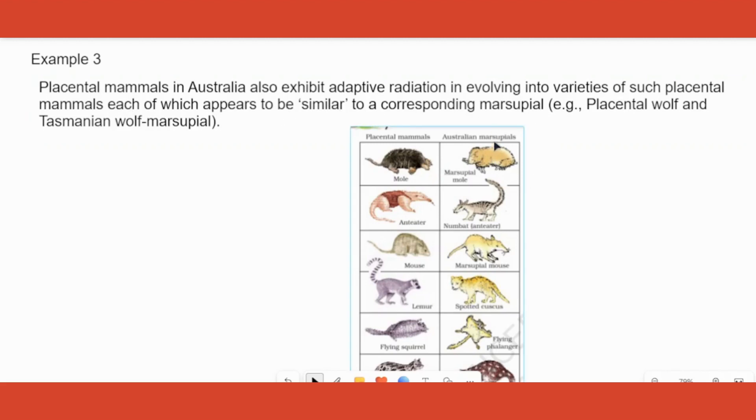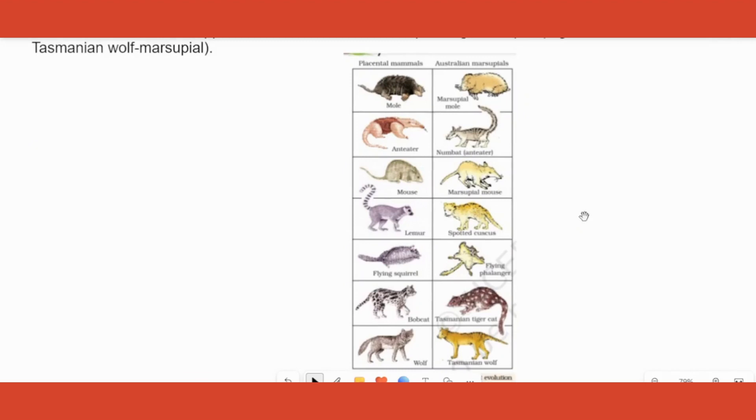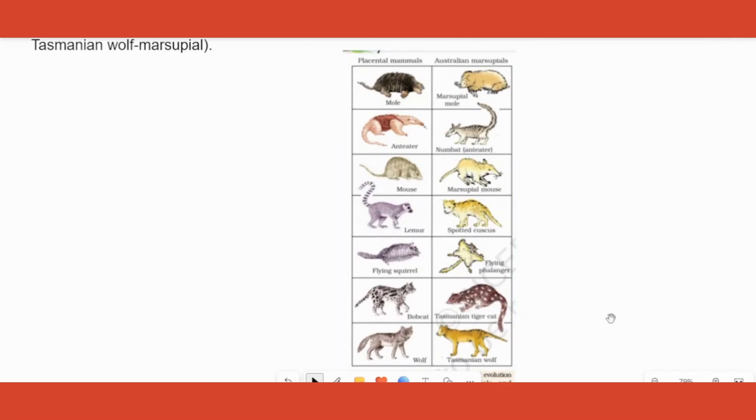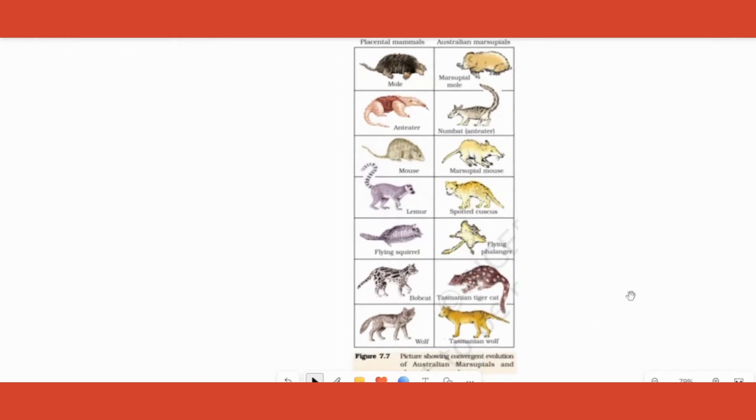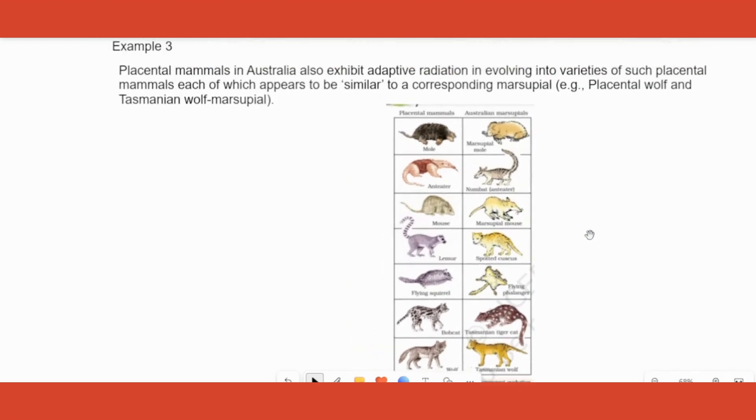Because what is a corresponding placental mammal for this cuscus they can ask, then you should write lemur. So this table you need to learn, that's all. This should fetch you two to three marks pakka, because either definition like I said, or example of finches or the marsupials or placental mammals,